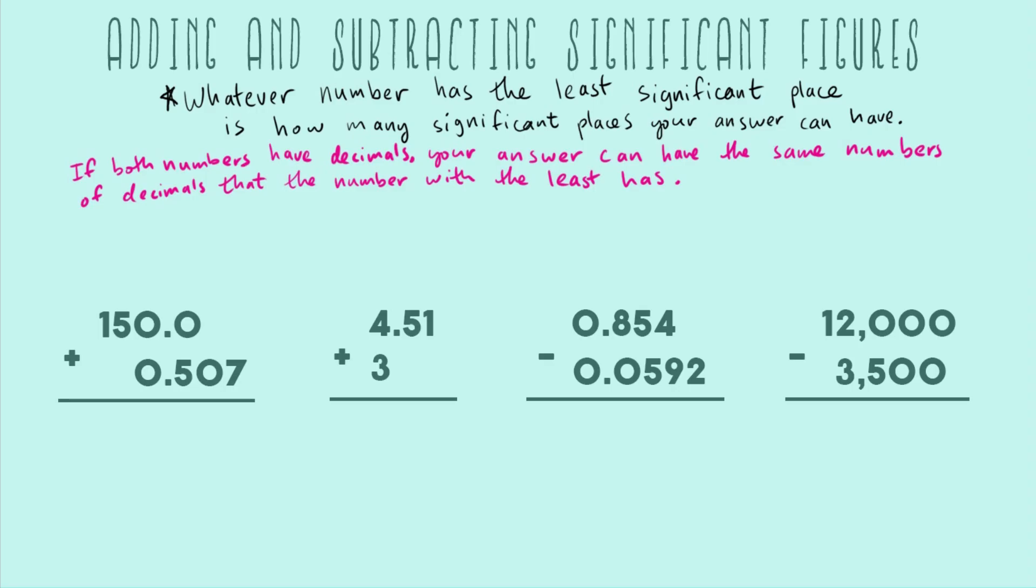Before we start, there's one last thing, which is always how we'll treat sig figs. That rule is math first, sig figs after. With all these problems, we're going to do the math first as if we had never heard of sig figs. Then we can go back and look at the rules, and the way we'll adjust the sig figs is to round to a certain number.